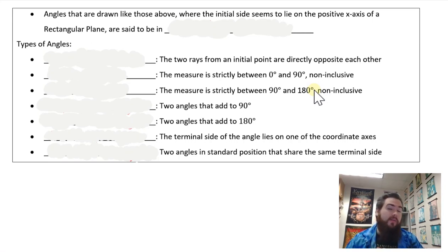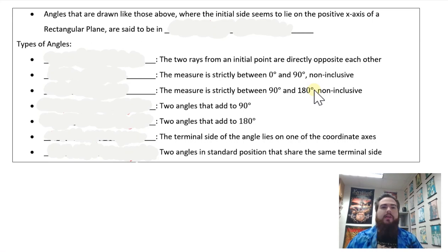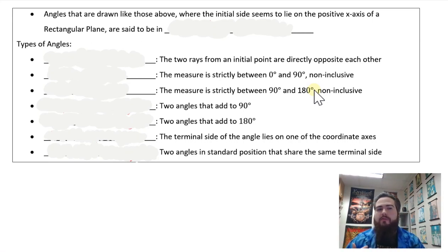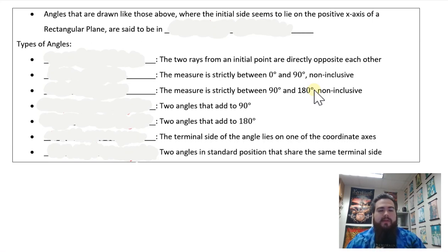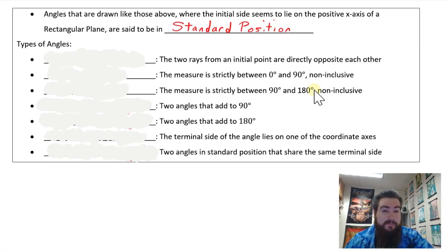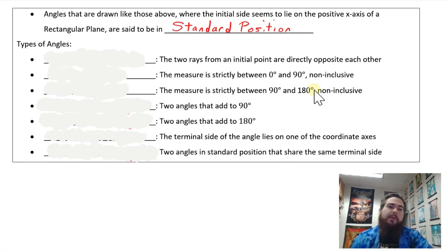Angle measures drawn with an initial ray facing to the right along what we may refer to as the positive x-axis on a rectangular plane is said to be in standard position. This is typically how we will draw angle measures for the time being until we become a little more familiar with them.